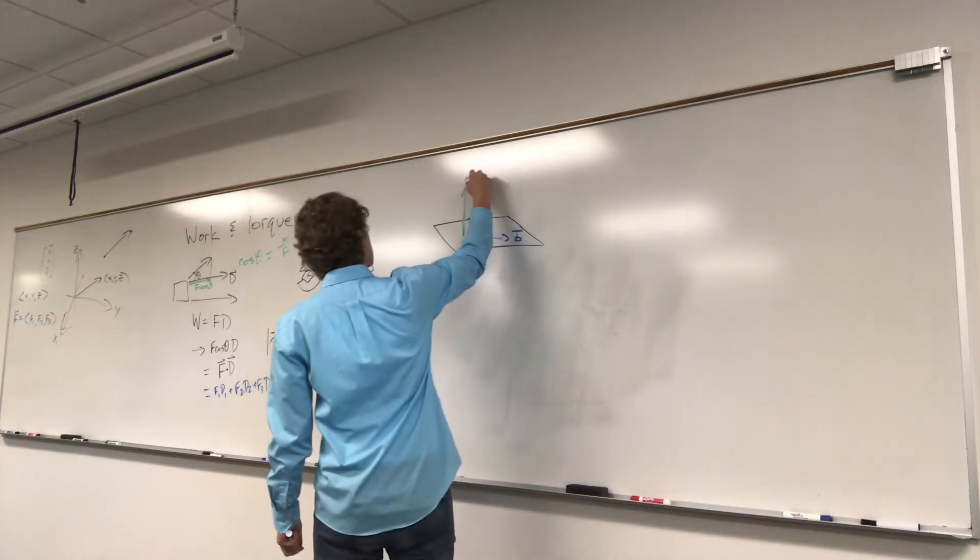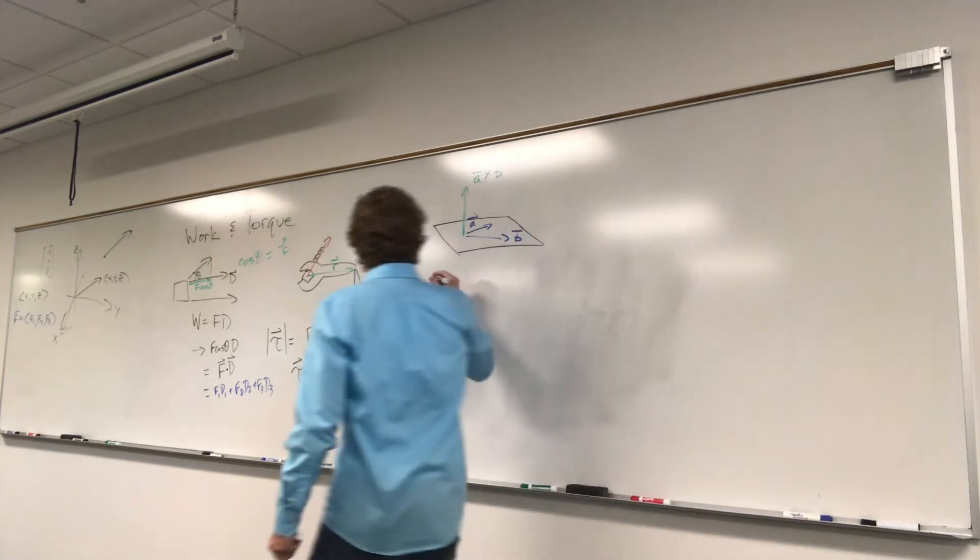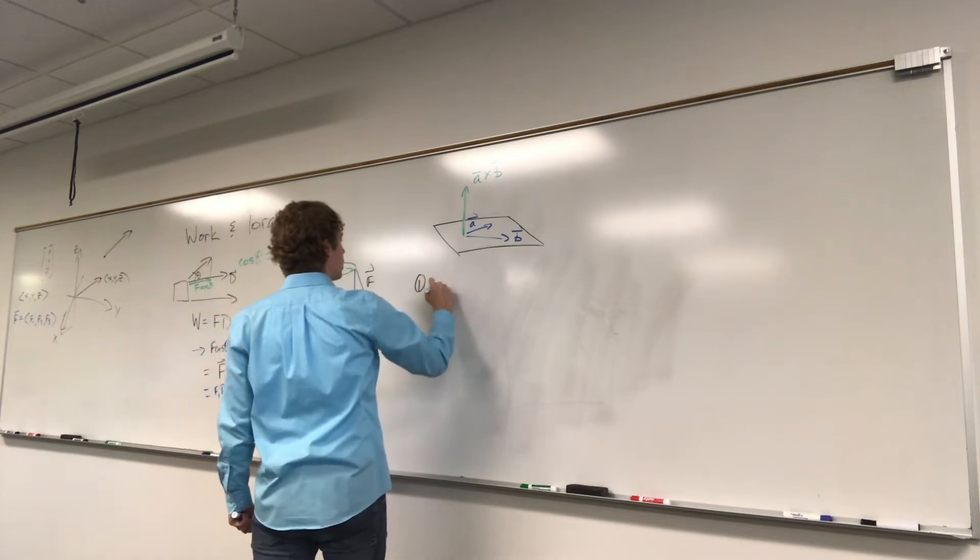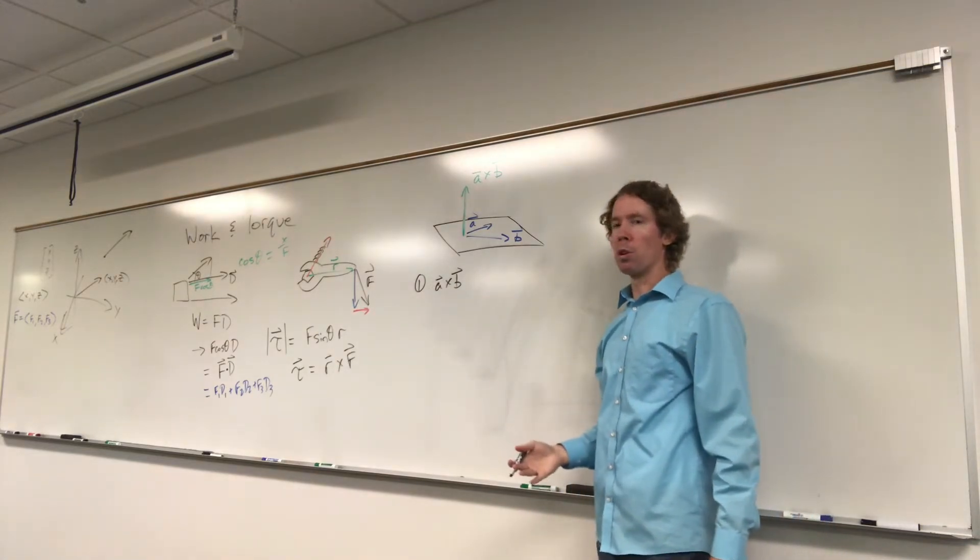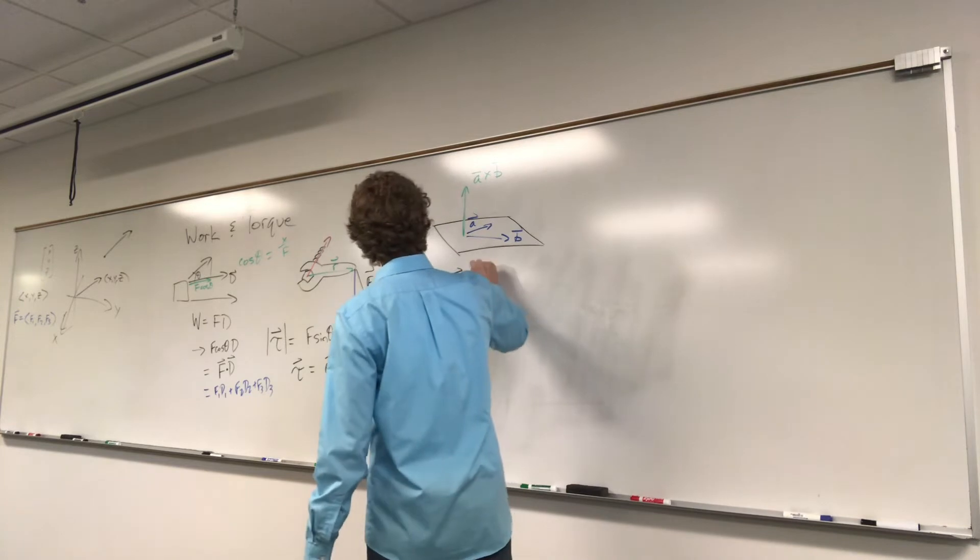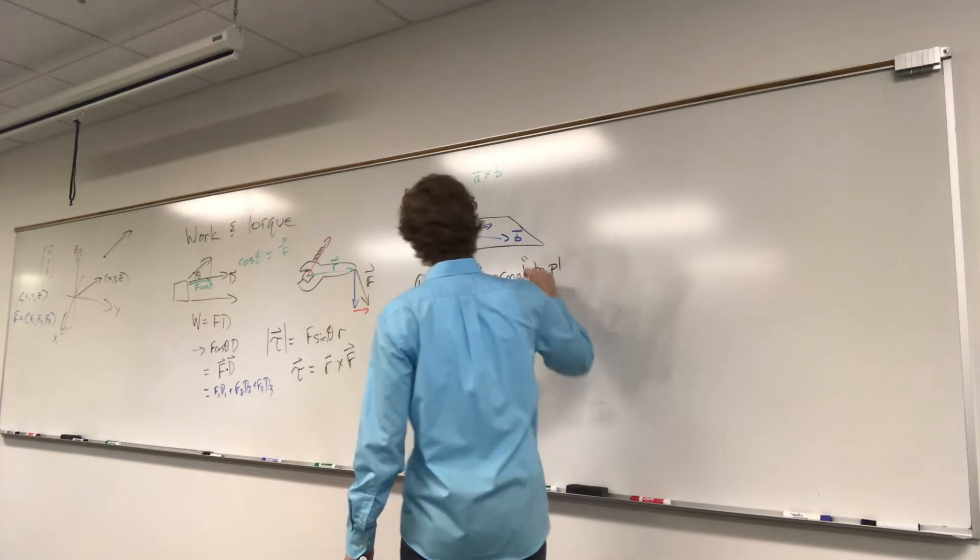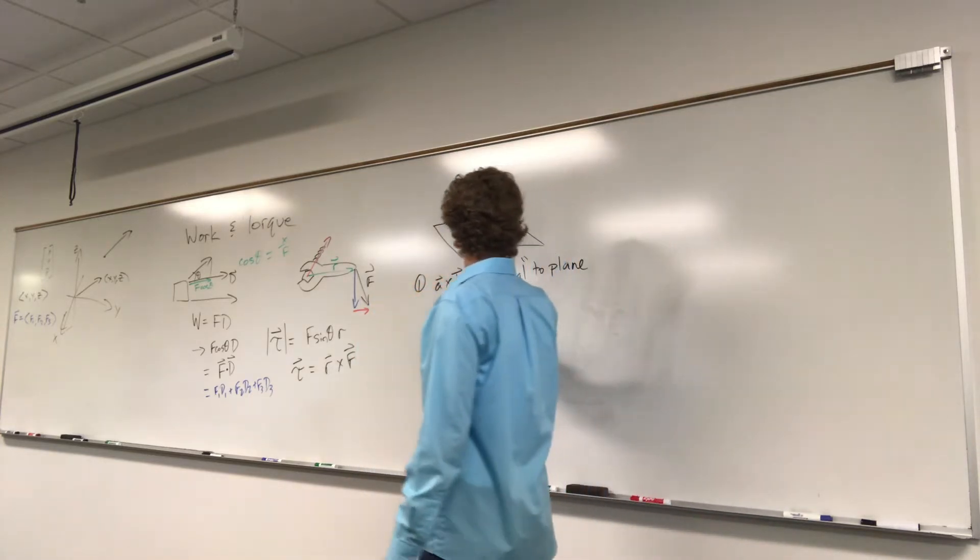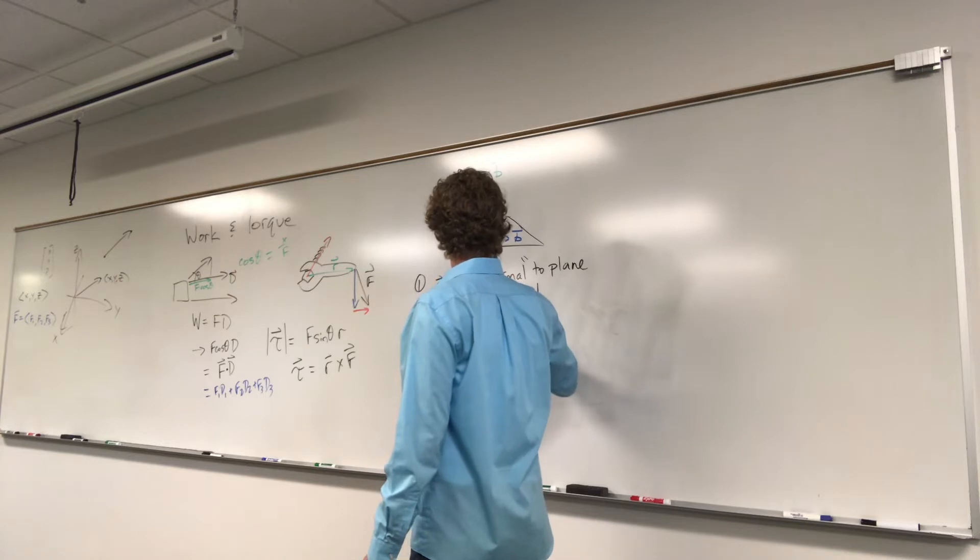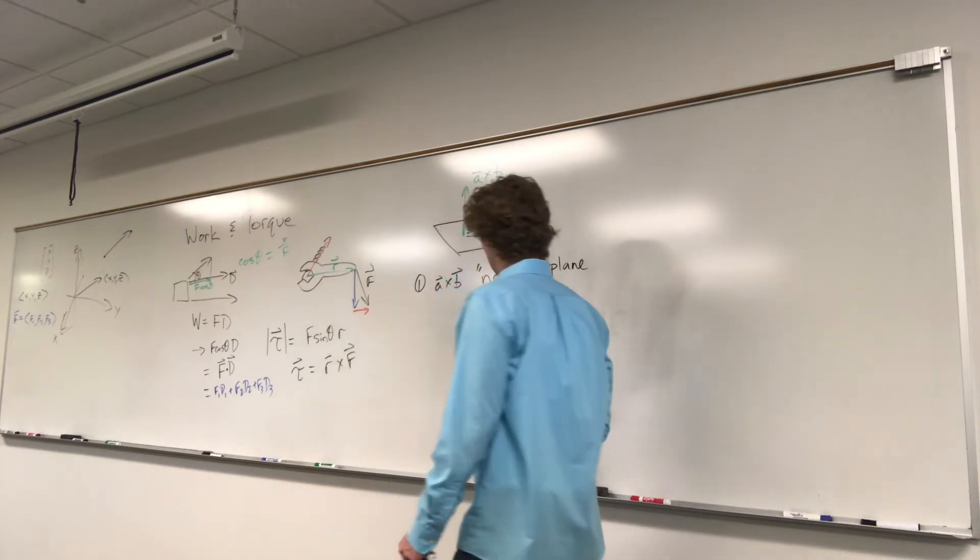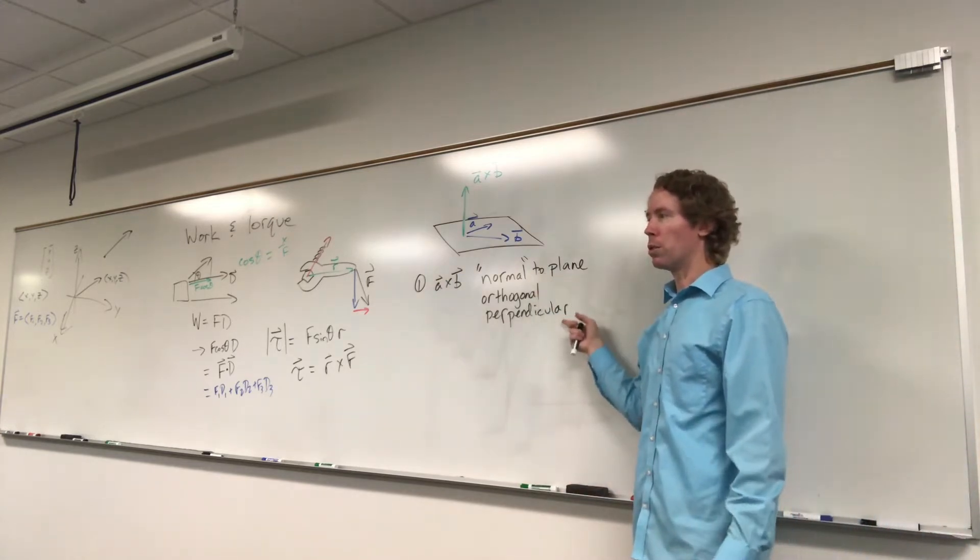This is, let's write this as A cross B. So first thing, A cross B is perpendicular to the plane. With vectors, people usually use the word normal to the plane. So I'm going to use that word. People also use the word orthogonal. So we could also say orthogonal here. Or perpendicular. And you just need to be familiar with all three of those terms, meaning the same thing.